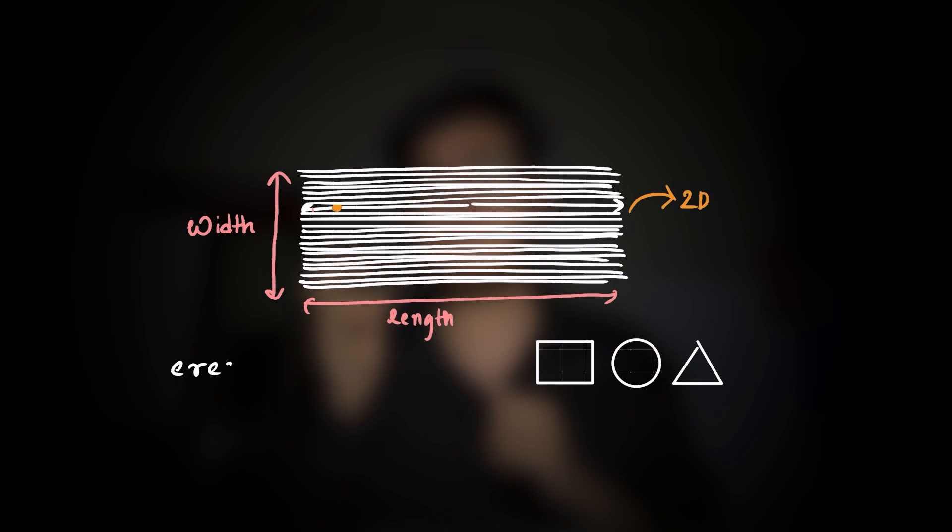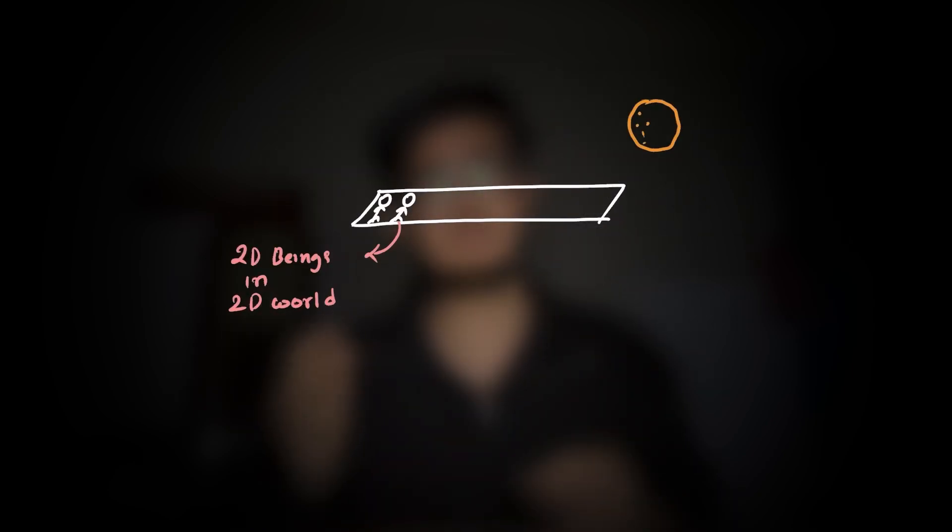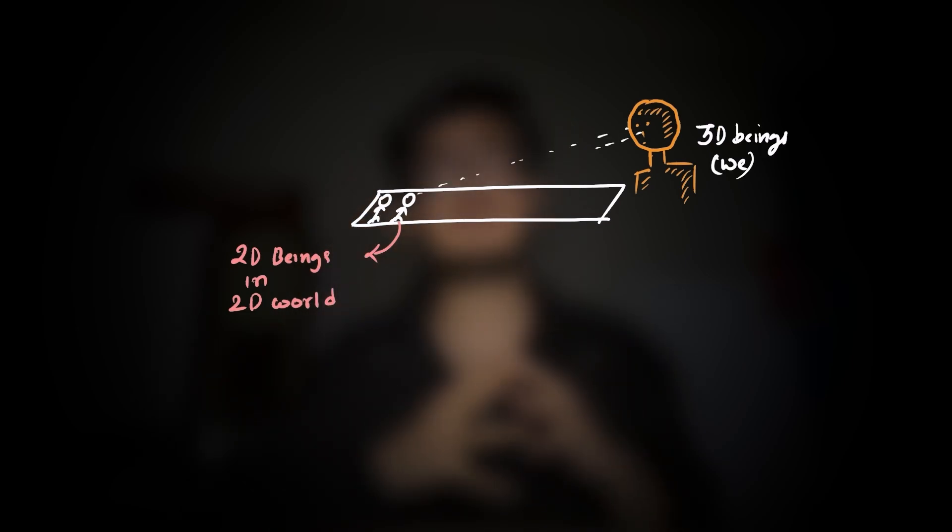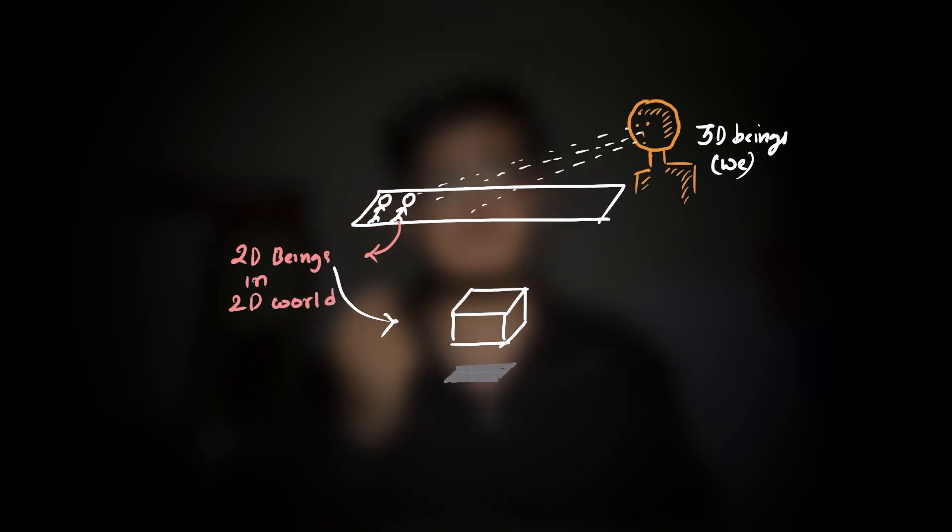This is where squares, circles and all the 2D shapes exist. To 2D beings their world is complete, but we as 3D beings can see their entire existence from a higher perspective. A 2D creature would never comprehend a true cube, only its 2D shadow slice.